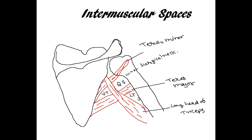The lower triangular space: above we have the lower border of the teres major muscle, the lateral side has the radial groove of the humerus, and the medial side again has the lateral border of the long head of the triceps.